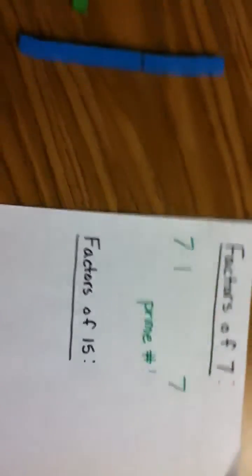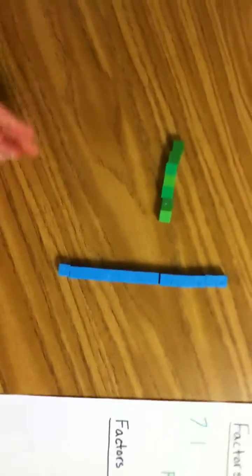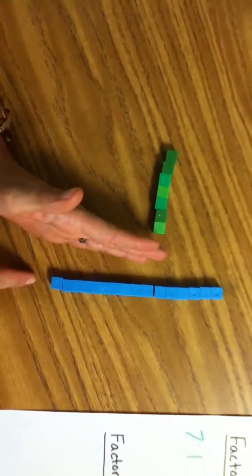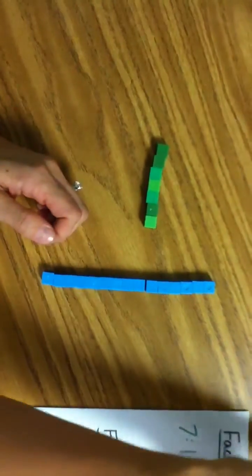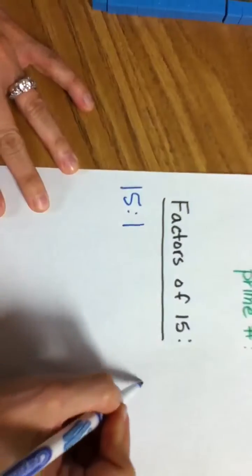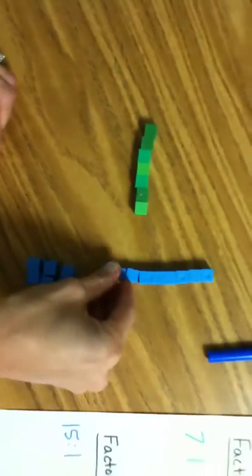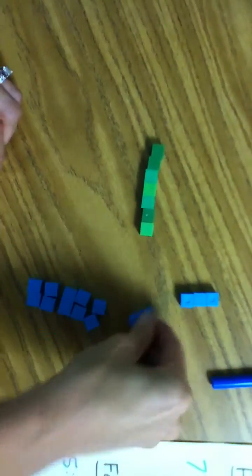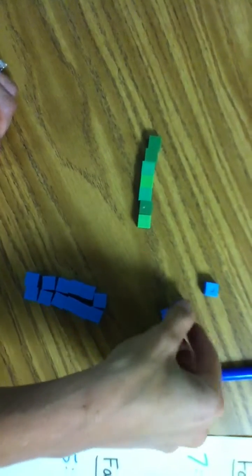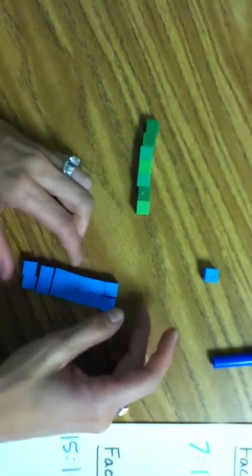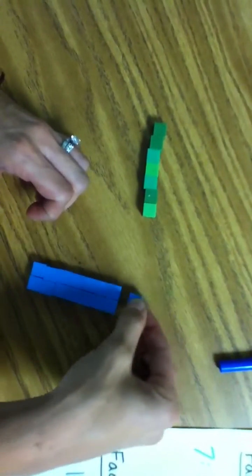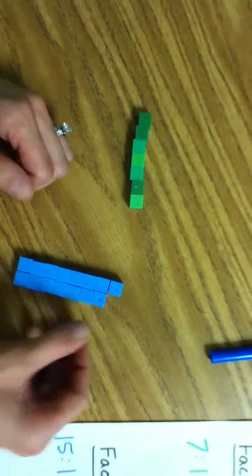All right, now we're going to look at the factors of 15. So, of course, I have my 15 by 1, so then I could go to my factor list. 1 by 15. Then I can try for a 2. I almost see a rectangle. Almost, almost. There is a rectangle. There is, but, oh. Sniky. Not going to work.